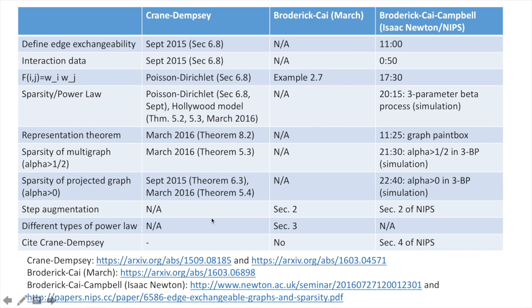The initial Broderick and Kye paper did not cite the Crane and Dempsey paper. The NIPS paper does cite the Crane and Dempsey work, but not until Section 4, and they do this in a very misleading way. In the way they cite it currently, they suggest that they introduce this alongside us, and that's simply not the case. We introduced it well before they did, and the ideas they present in their NIPS paper for the most part have no direct link to anything in their earlier March paper, but do have a direct link to ideas we presented previously — yet they don't call attention to this.